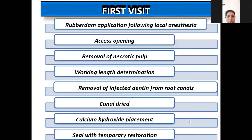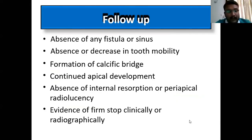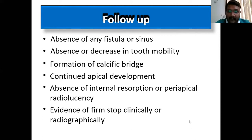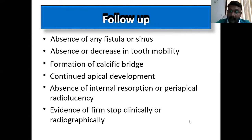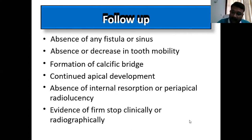During follow-up, things to check: absence of any fistula or sinus, absence or decrease in mobility, formation of a calcific bridge or calcific barrier at the apex, renewed apical development, and absence of any internal or periapical radiolucency — because periapical radiolucency shows secondary infection is developing.